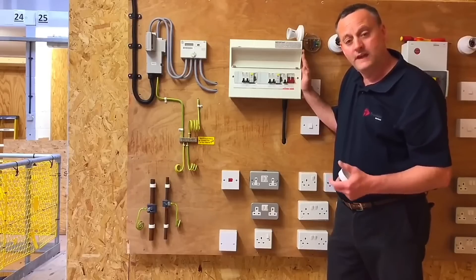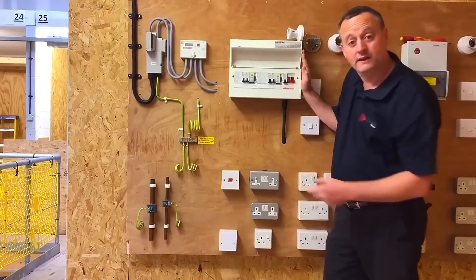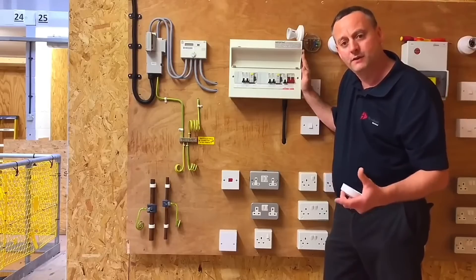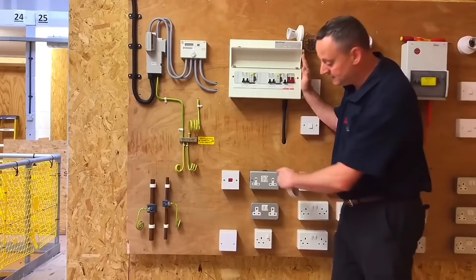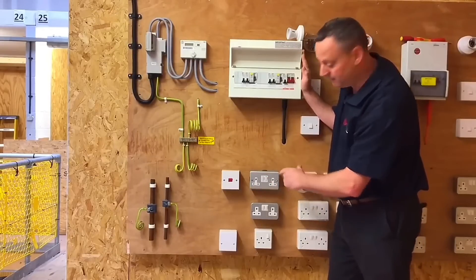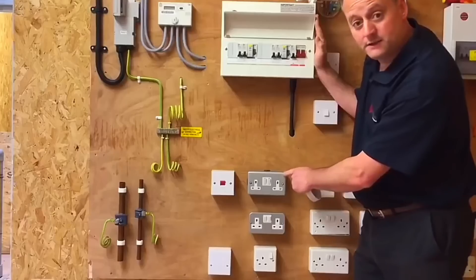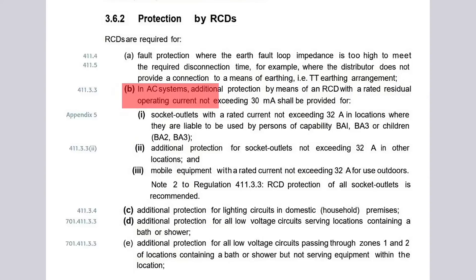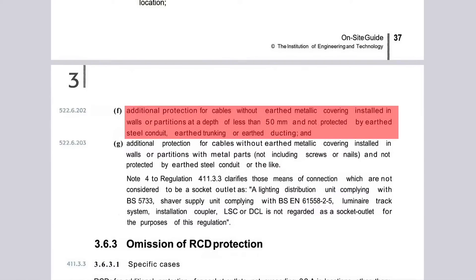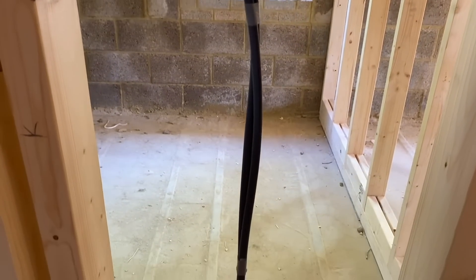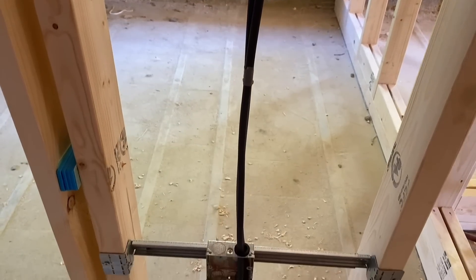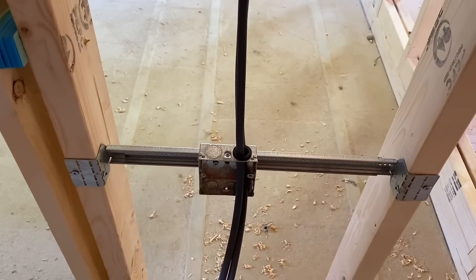Additional protection is required for socket outlets — 13 amp socket outlets. Currently in the regulations it says socket outlets up to 32 amps; it isn't the rated value of the breaker, it's the rated value of the socket outlet itself. These are 13 amp socket outlets. All socket outlets in a domestic dwelling are going to require additional protection by an RCD rated at 30 milliamps. Other additional protection will be required where cables are running in stud walls. If you've got lighting circuits, cooker circuits etc. running in stud walls with no further protection, additional protection would be required. If you're not burying cables in the wall at a depth of 50mm or greater, those circuits will need additional protection.